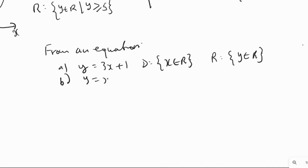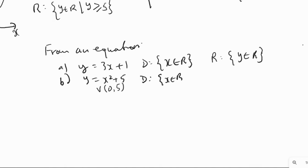For y = x² + 5, this is a parabola opening up because x² is positive, and the vertex is at (0, 5), so we have a minimum. The domain for a parabola opening up or down is always x belongs to R. The range depends on the minimum: since the minimum is 5, y must always be greater than or equal to 5.